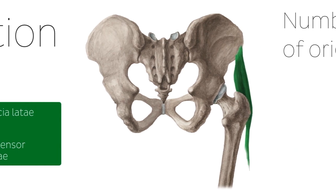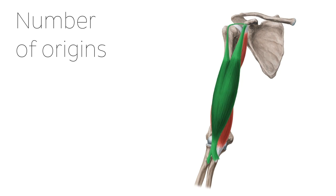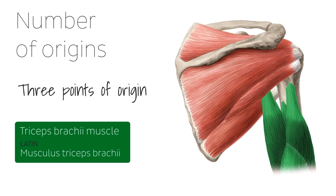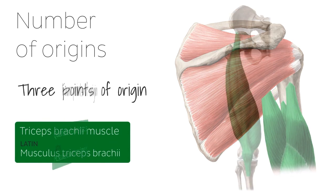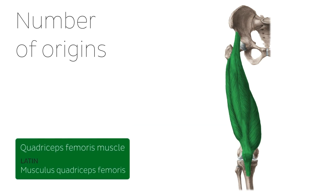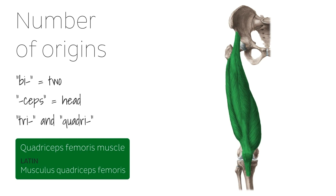Some muscles derive their names from the number of points of attachment at their site of origin. A good example of this is the biceps brachii muscle, which has two points of origin. We also have the triceps brachii, which has three points of origin, and the quadriceps femoris muscle, which has four points of origin. The term biceps comes from the Latin meaning two-headed — bi meaning two, and seps from the word caput meaning head. Following the same logic, the three-headed muscle is given the prefix tri and the four-headed muscle quadri.